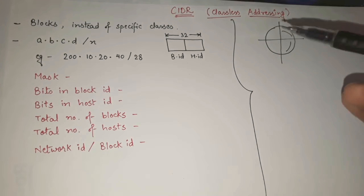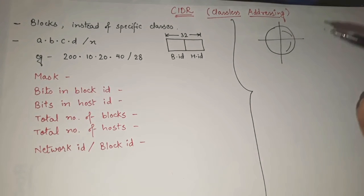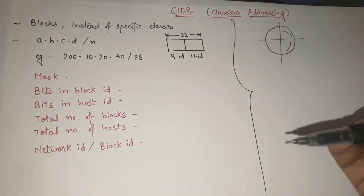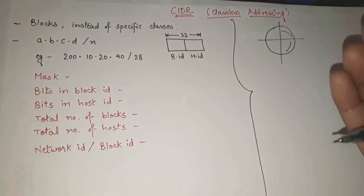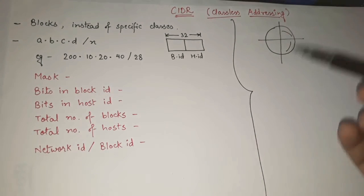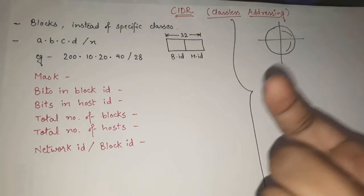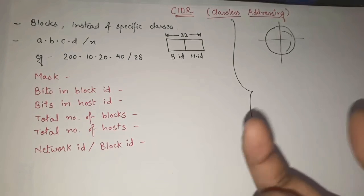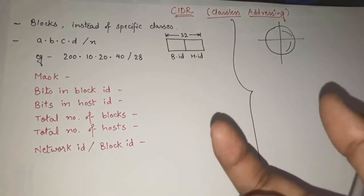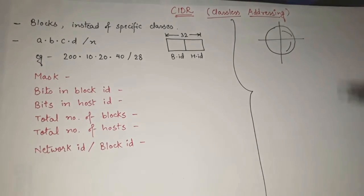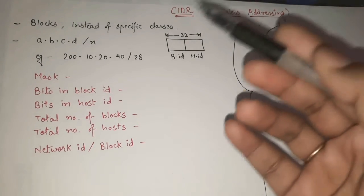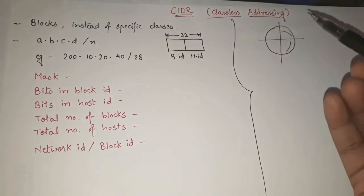That was the main drawback of classful addressing. But in classless addressing, that drawback is overcome. What we do now is assign only that number of IP addresses that is needed. This is known as classless addressing.